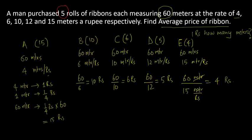So now I have total length. How much total length have I purchased? If you see all 5 ribbons, 60 times 5 equals 300 meters of length is purchased.